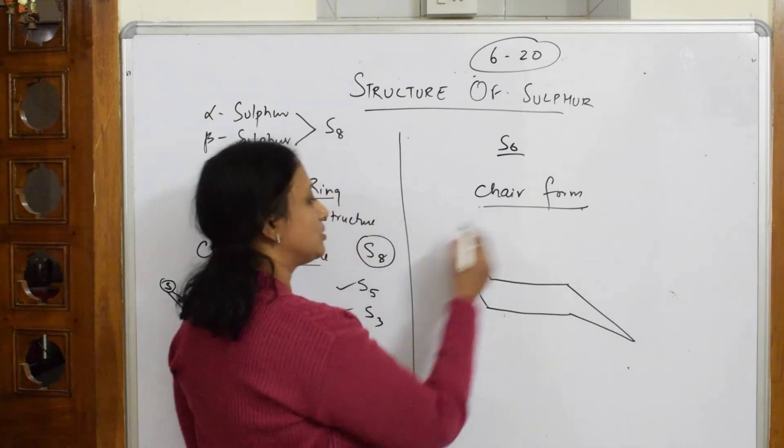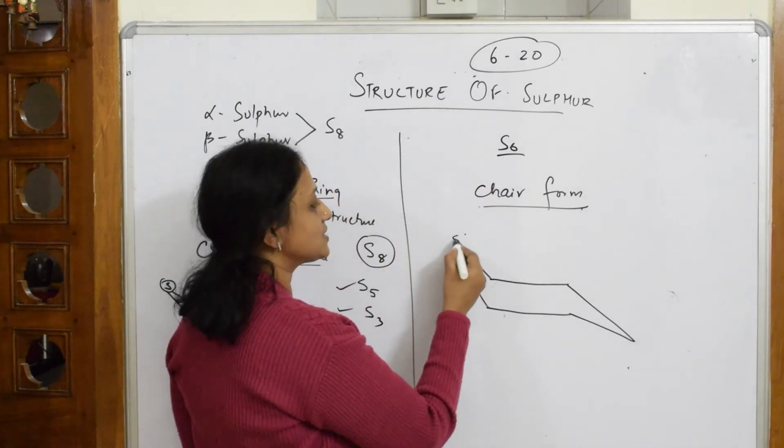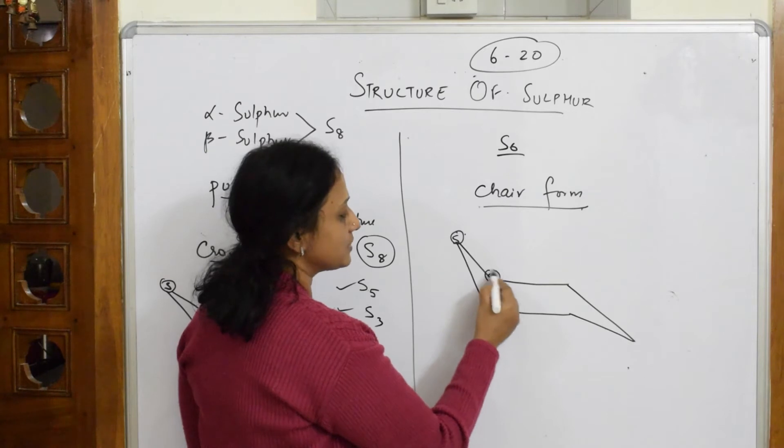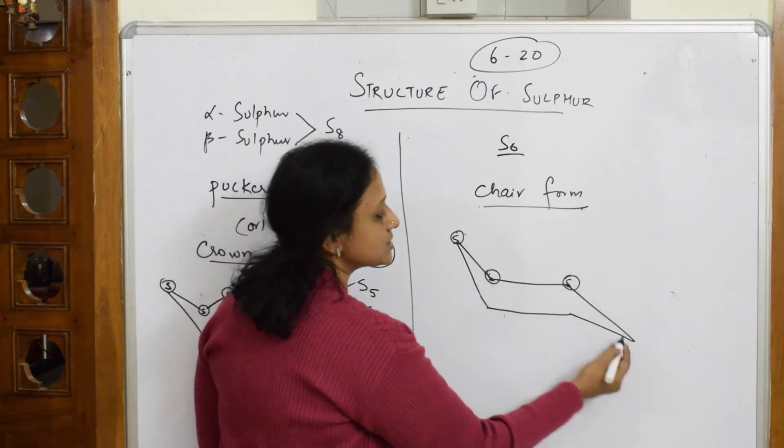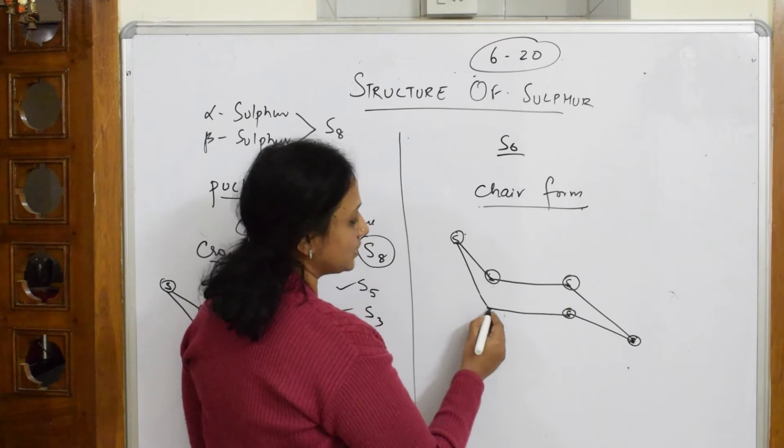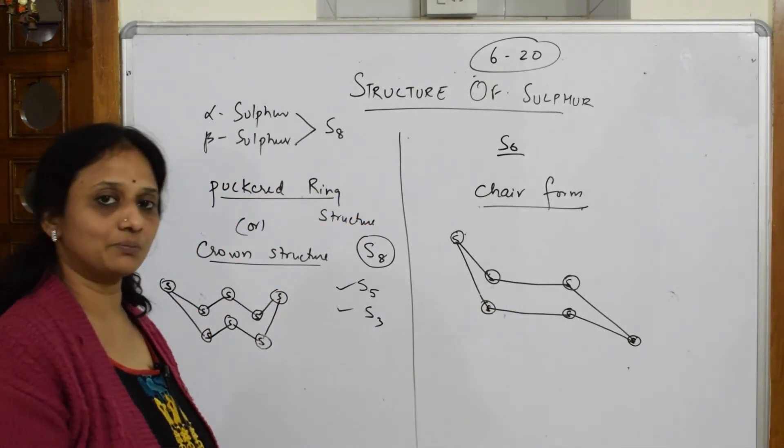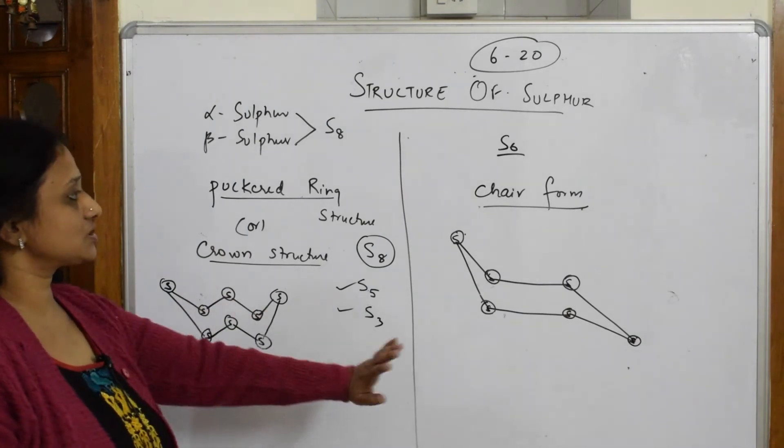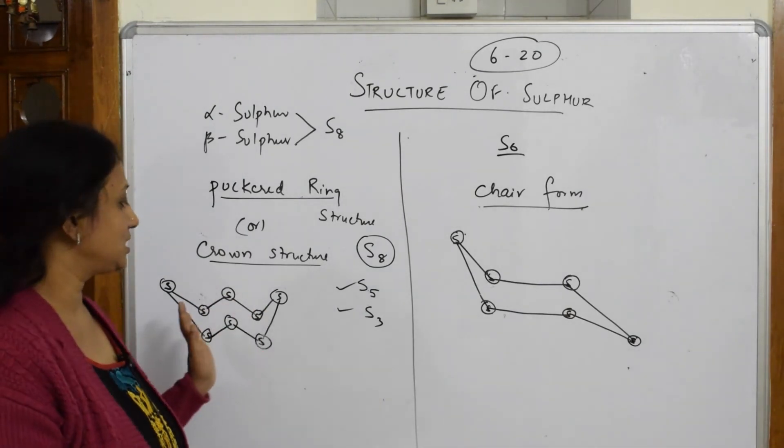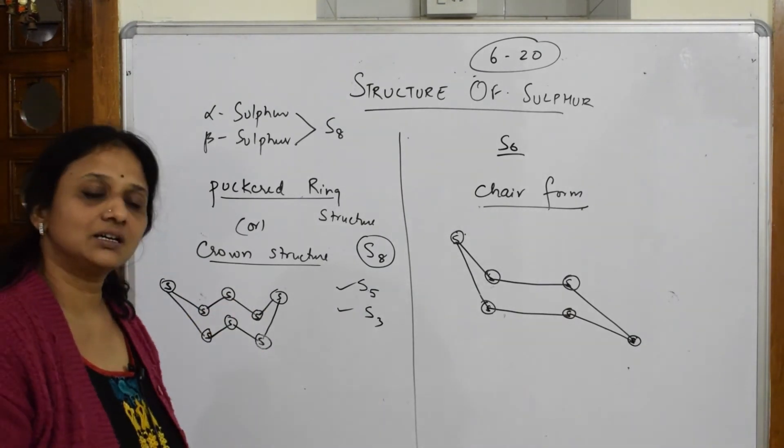First sulfur, S6. One sulfur make a circle, second sulfur make a circle, third sulfur make a circle, fourth, fifth, and sixth. This is your chair form of sulfur, that is S6 cyclocompound. Both the structures please practice, and importantly you have to write the bond length and bond angle also.